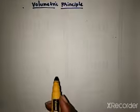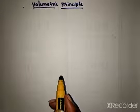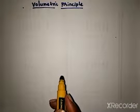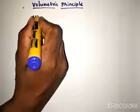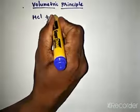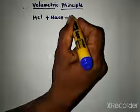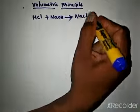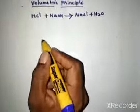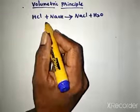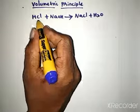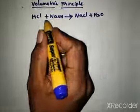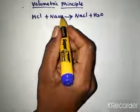When two solutions completely react with each other, the product of volume and normality of one solution will be equal to the product of volume and normality of the other solution. For example, if HCl and NaOH react with each other, they give NaCl plus H₂O.